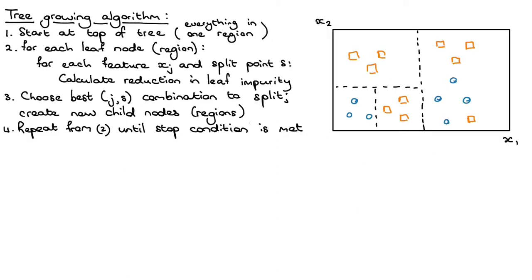This is the tree growing algorithm. We talk about growing trees, building trees, constructing trees, or training trees — all of those terms mean the same thing. This is the algorithm for growing a decision tree, and you will see that it's very similar to the algorithm used for growing regression trees. In fact it looks exactly the same apart from one step: calculate reduction in leaf impurity. Other than that, all the other steps are the same.